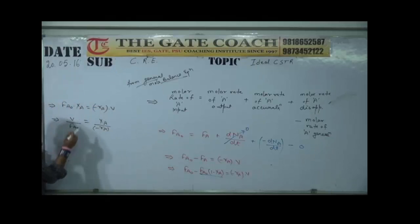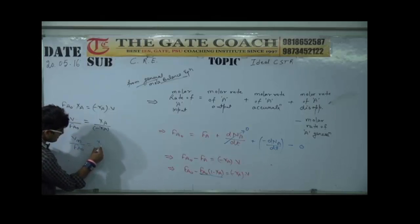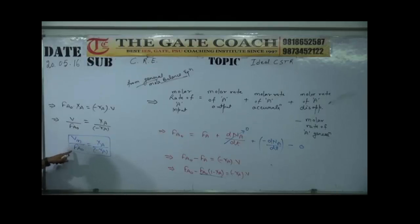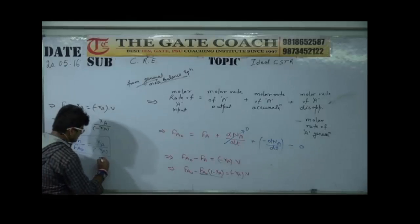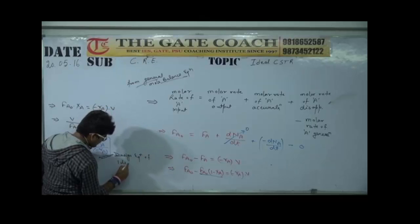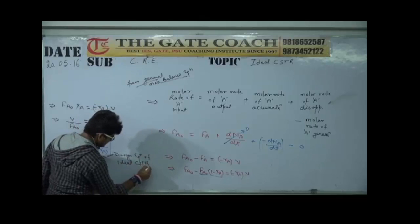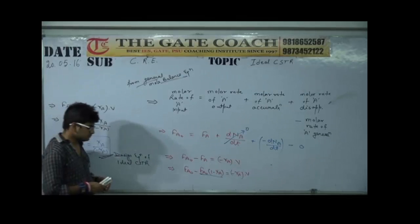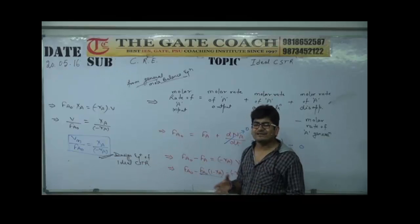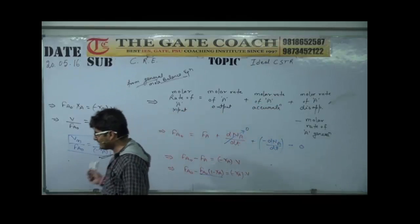So we can write V as the volume of the reactor, where rA is the rate of reaction, XA is the conversion of A achieved in the reactor, Vm is the volume of reactor required, and FA naught is the initial molar flow rate. This equation — V over FA naught equals XA over minus rA — is the design equation of the ideal CSTR.